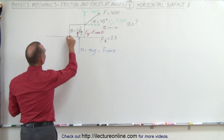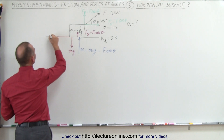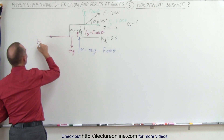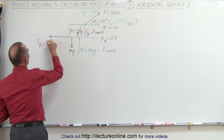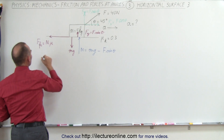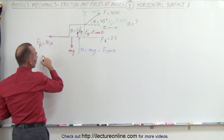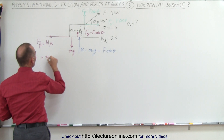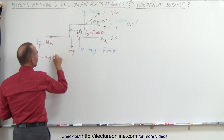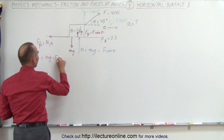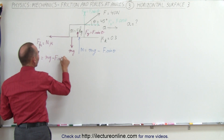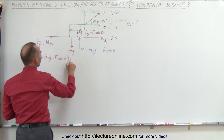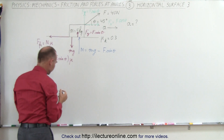The friction force in this direction — force friction — is going to be equal to the normal force times mu, and in this case the normal force will be mg minus F times sine of theta, all multiplied by mu.